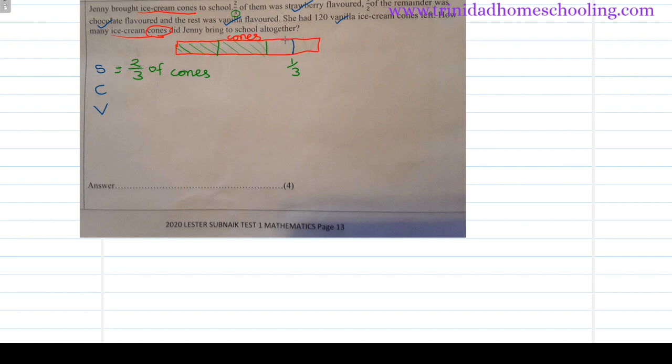Half of the remainder. 'Of' means to multiply. The remainder is a third, so half of a third is chocolate. We multiply here: one by one is one, two times three will give us six, so one-sixth of the cones are chocolate.